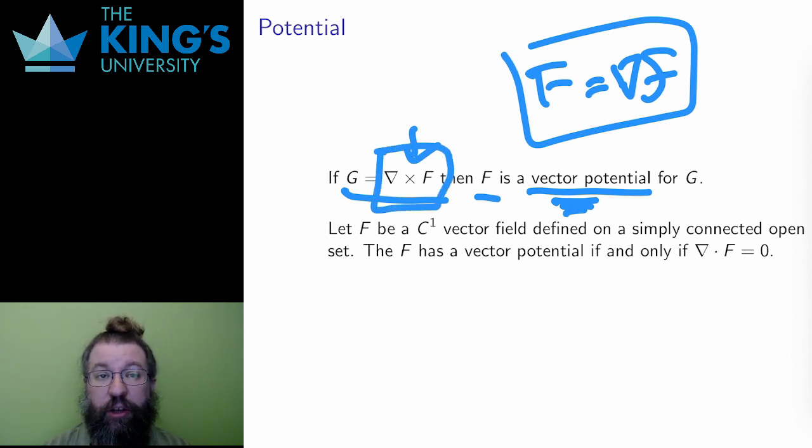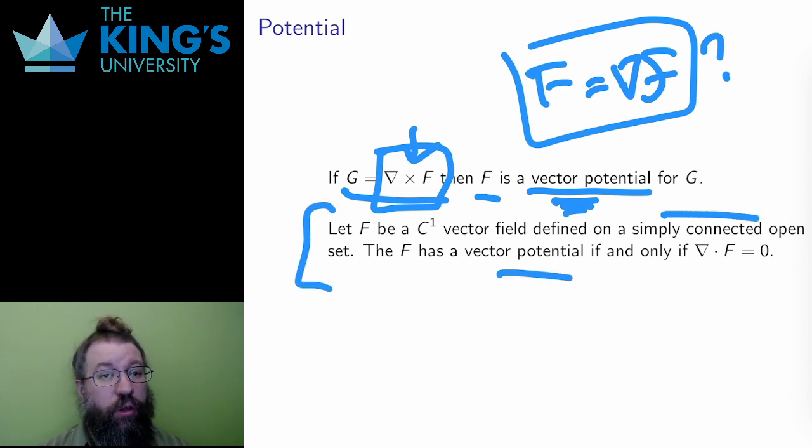For the scalar potential, I could test if a function had a potential by taking the curl, and if the curl was zero as long as I was working on a simply connected open set, then there was a scalar potential that I could find. The same thing happens here, on a simply connected open set, a field has a vector potential if its curl is zero.